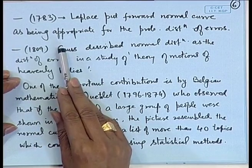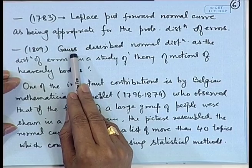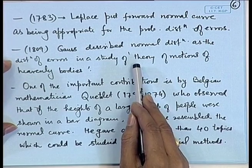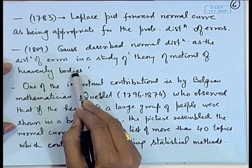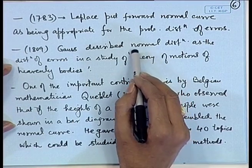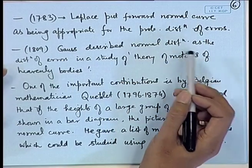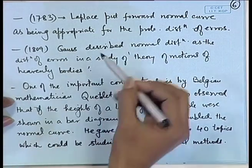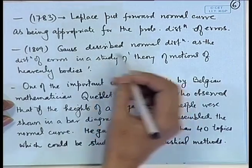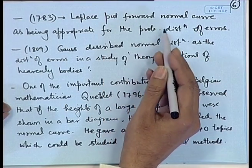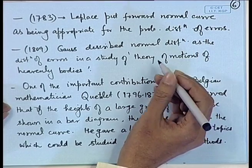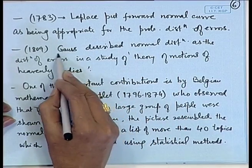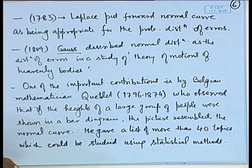Later on, the great mathematician Carl Frederick Gauss considered the study of planetary motions — the theory of motions of heavenly bodies — and he also came up with the same conclusion that the distribution of errors for astronomical measurements can be nicely described by the normal distribution. His treatise came in 1809, and he credited Laplace with the original idea. However, the normal distribution carries the name Gaussian distribution because of Gauss's study on this topic.